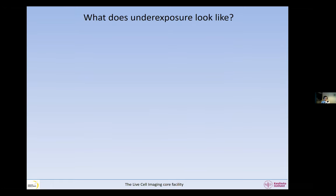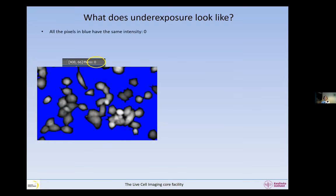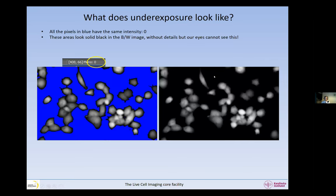One problem is saturation; another is underexposure. We've seen what saturation looks like — a flat top if we draw a line. What about underexposure? These pixels are color-coded in blue. All the pixels in blue have the same intensity of zero. Underexposure is much harder to detect than saturation. When you don't have this blue color coding, it's very difficult to know that you are actually underexposed. Our eyes cannot really detect this — you need the help of this mask.